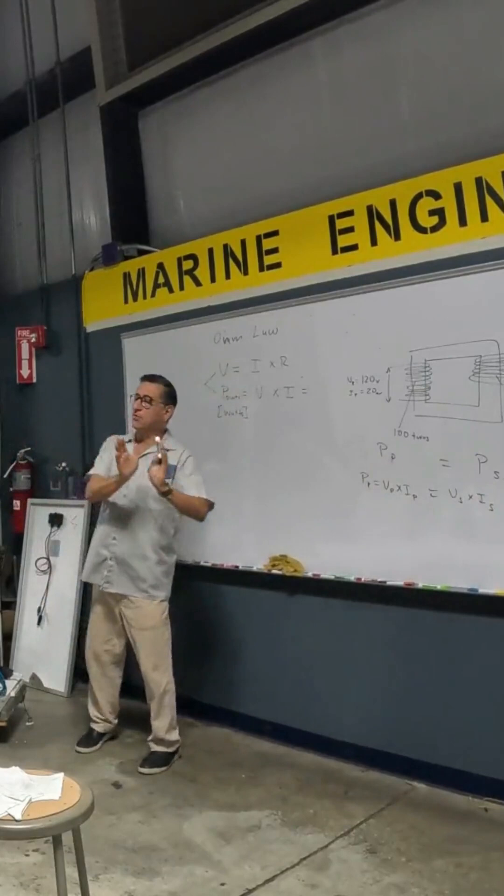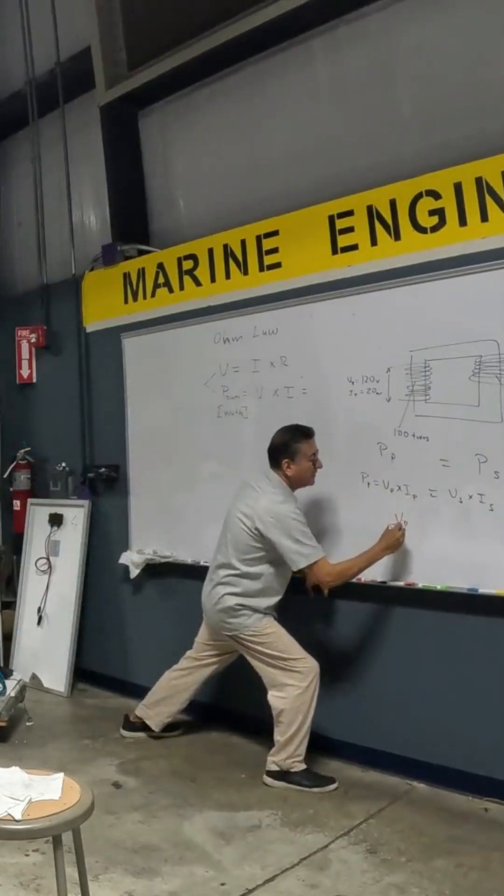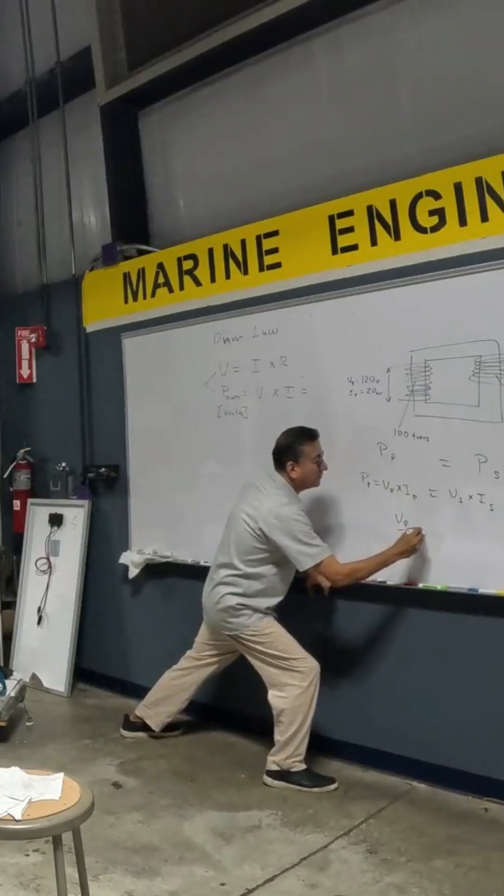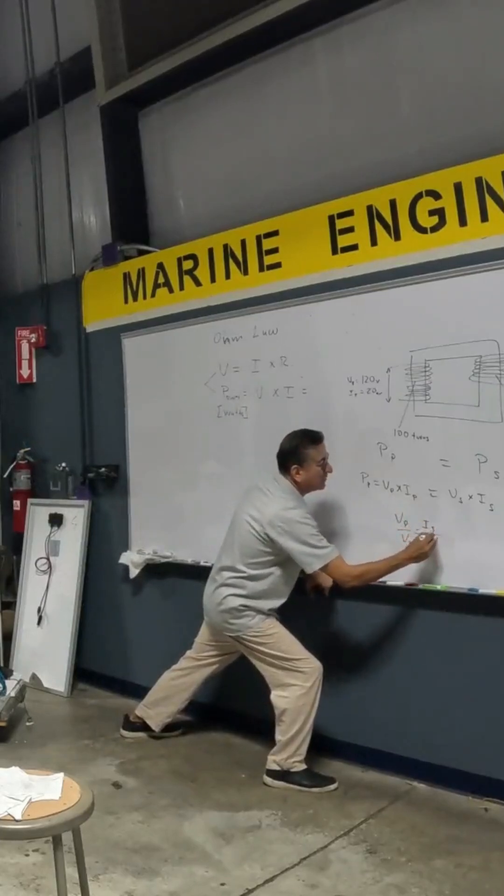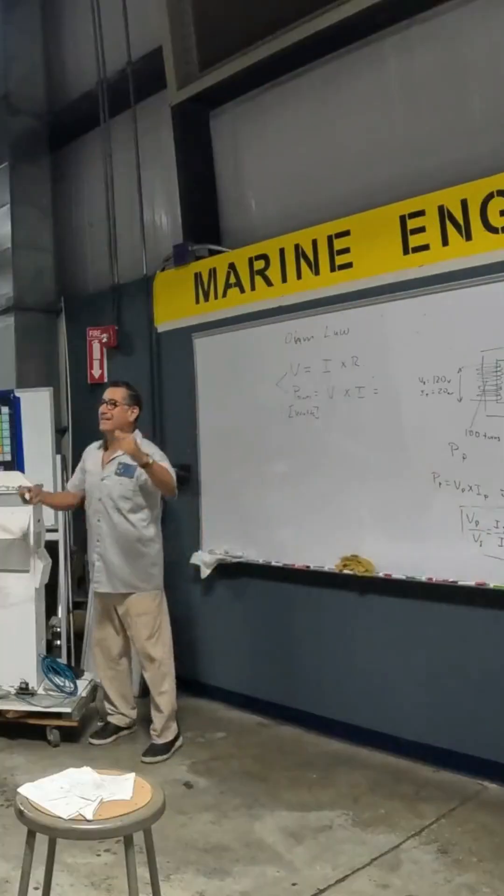Let me organize that formula. I am going to put the voltage in one side and the intensity in the other side. If I move it here, what is in the primary divided by the voltage in the secondary should be equal to the intensity in the secondary divided by the intensity in the primary. And bingo, this is the secret.